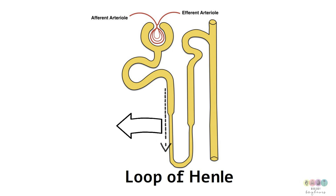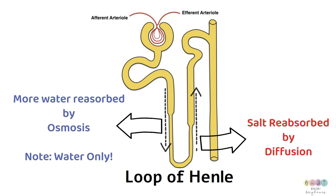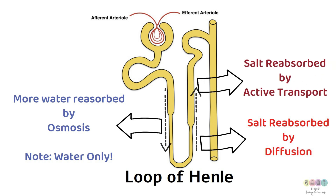With most reabsorption complete at the proximal convoluted tubule, what remains is fine tuning. The descending limb of the loop of Henle is where more water is reabsorbed by osmosis — only water on the descending limb. The ascending limb deals with reabsorption of salt: salt is reabsorbed by diffusion near the bottom of the loop of Henle, and by active transport at the top of the ascending limb.